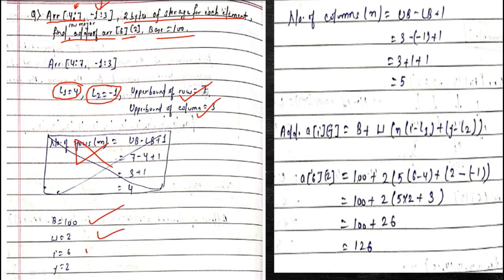In the row-major formula, we are concerned about the number of columns, not rows. The number of columns can be found using: upper bound minus lower bound plus 1. Upper bound of column is 3, lower bound is -1, so 3 - (-1) + 1 = 5. So there are 5 columns. Now we have all the values needed to apply the row-major formula.